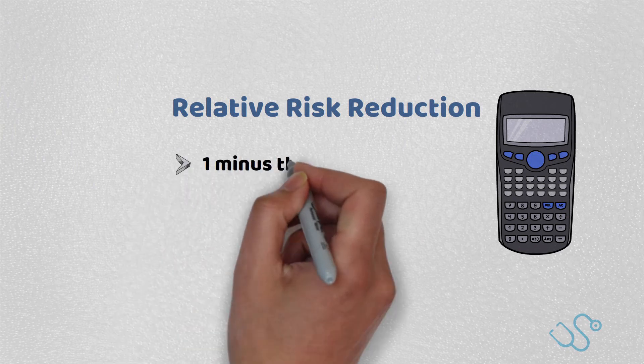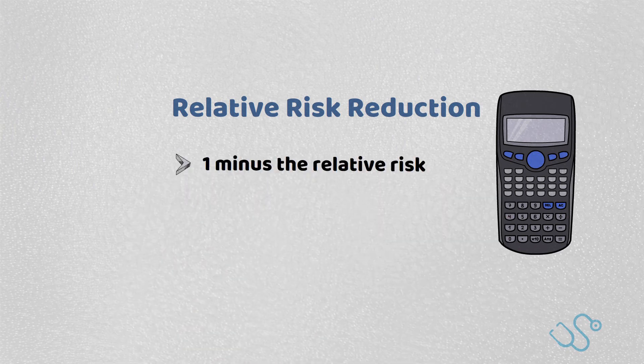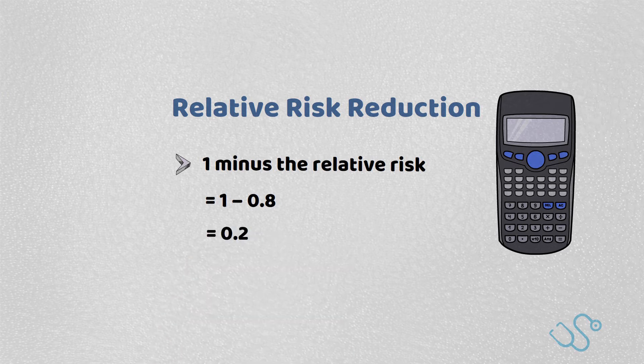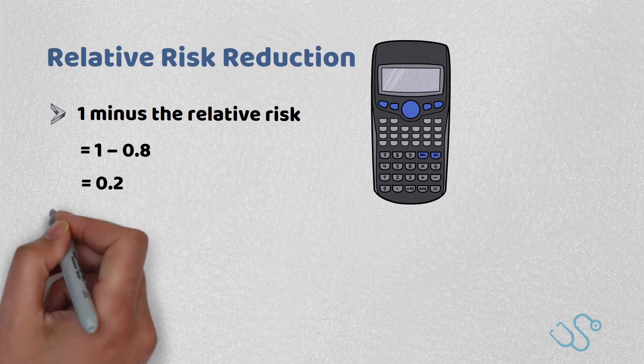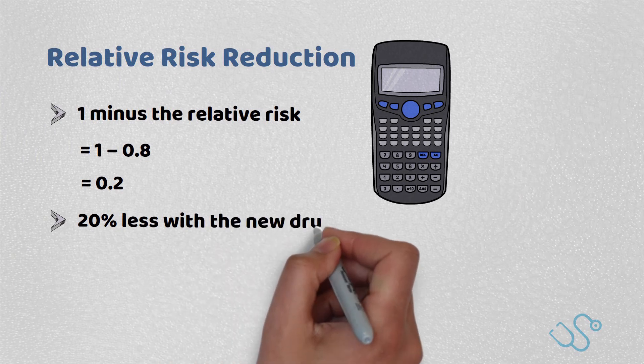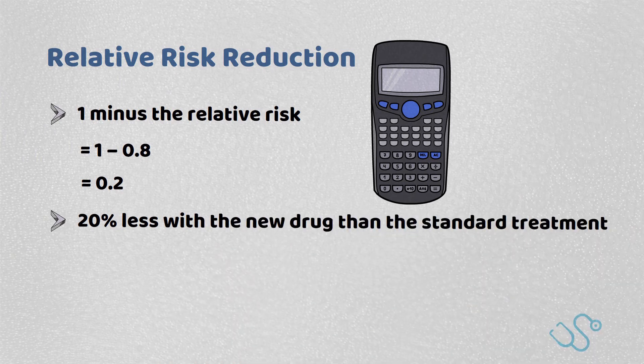You can now work out the relative risk reduction, which is basically 1 minus the relative risk. So in this case, that's 1 minus 0.8, and that gives you 0.2. This means that the risk of death is 20% less with the new drug compared to standard treatment.